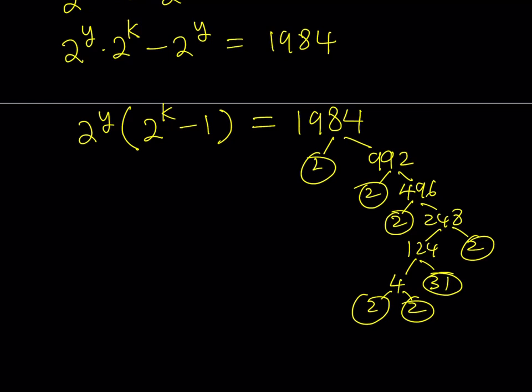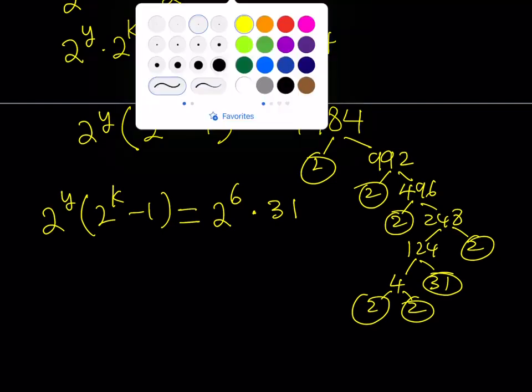So, we can basically write this as 2 to the power of y multiplied by 2 to the power of k minus 1 is equal to 1984. Which can be written as 2 to the power of 6 multiplied by 31. So, what's so cool about that? Well, take a look at this. Since we only have powers of 2 and a prime number, there's only one way to write the product on the left-hand side as the product of a power of 2 and 1 less than a power of 2. And the right-hand side was also written that way. So, one-to-one correspondence, everything looks good. We can proceed.